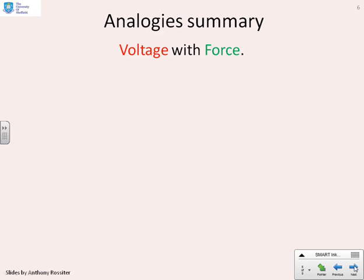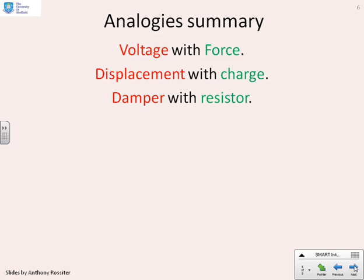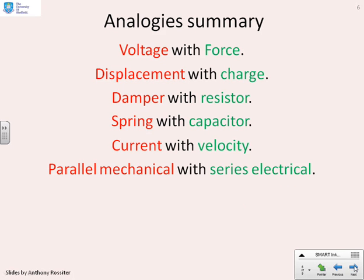So a summary. The sort of analogies you'll get to know. Voltage is analogous with force. Displacement is analogous with charge. So the displacement of the spring, for instance the extension X, is analogous to having a charge on a capacitor. A damper is analogous with a resistor. Both resist motion, either the current or the velocity, and dissipate heat when there is motion. A spring and a capacitor, they both store something to do with the flow. So the spring stores displacement and turns that into energy. Capacitor stores charge, turns it into energy. Current is analogous with velocity. Current is charge per second. Velocity, meters per second. And key one here, the parallel arrangement in the mechanical systems is analogous with the series arrangement in the electrical systems. And that's because when you have parallel and mechanical, the forces add to give you the total force. Whereas when you have series electrical, the voltage across each component add to give the total voltage in the loop.